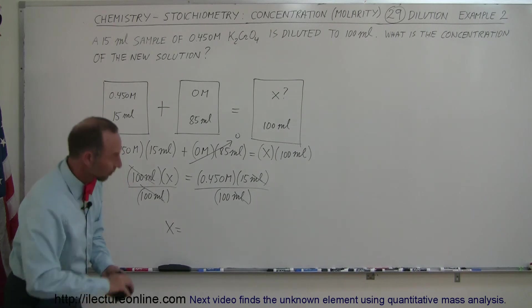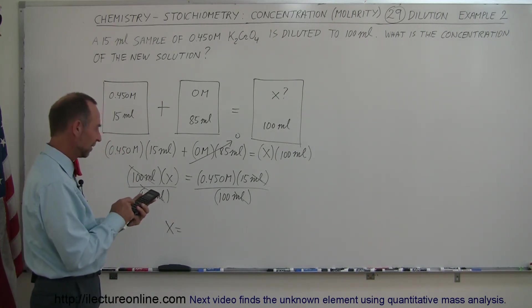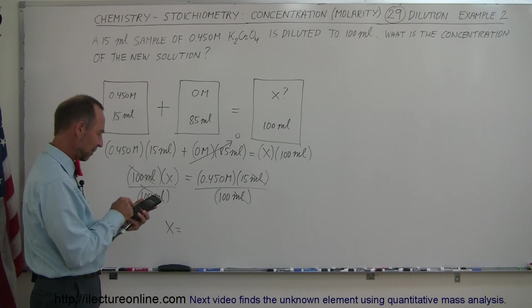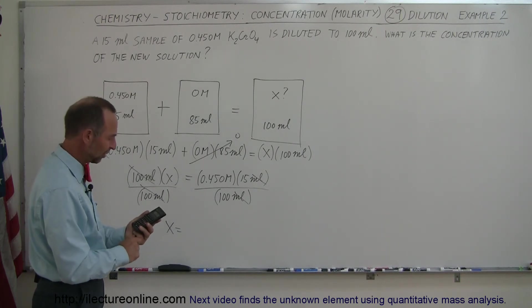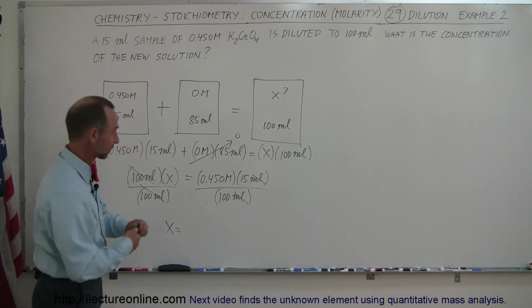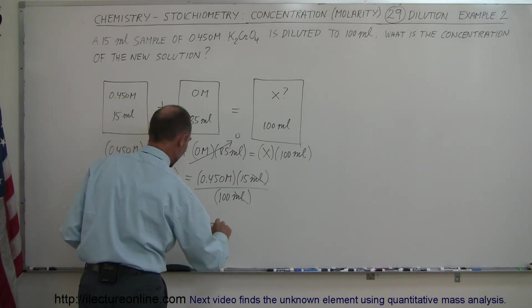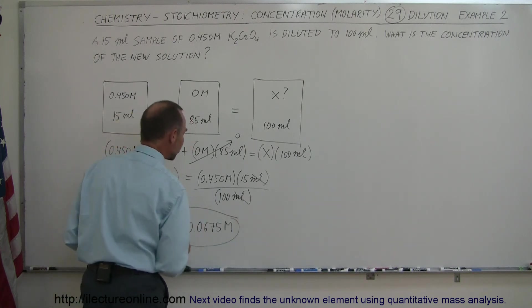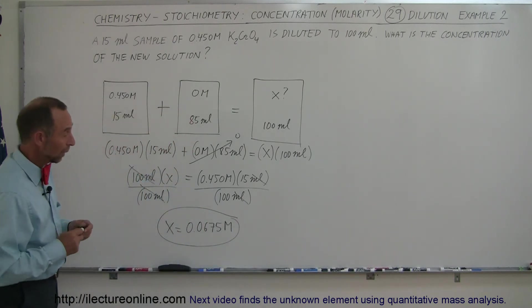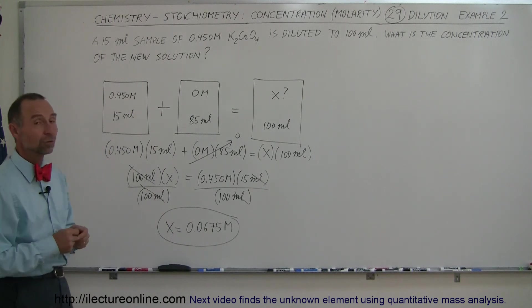All right, so what we have now is we have 0.45 times 15 divided by 100, and end up with 0.0675. So 0.0675 molar. So that would be the concentration of the new solution, and we would have 100 milliliters of that new solution.